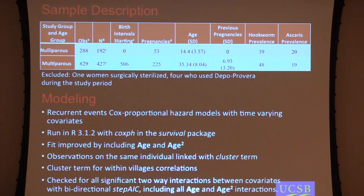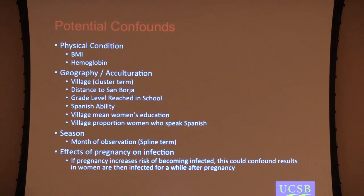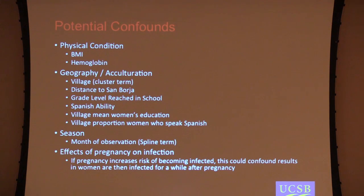There are a variety of controls included here. Physical condition might have an effect, so we use things like BMI and hemoglobin levels. We might expect clustering by village because villages vary in their acculturation and market integration, education levels, and potentially their exposure to helminths. So we've got a variety of measures of geography and individual-level acculturation — levels of education and Spanish ability. We might also expect some seasonality.